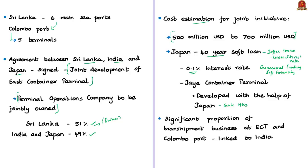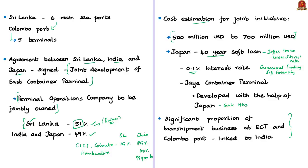A significant proportion of the trans-shipment business at the East Container Terminal and Colombo port is linked to India. The specialty of this deal is that Sri Lanka's sovereignty is not affected since it retains a majority 51% stake. By contrast, the adjoining Colombo International Container Terminal is 85% owned by China with Sri Lanka holding just 15%. Additionally, the entire Hambantota seaport is with China on a 99-year lease as Sri Lanka could not repay the Chinese loan. This is what you need to know about this news article.